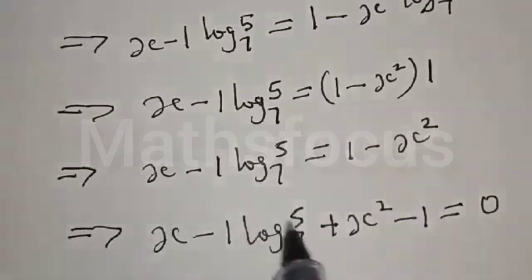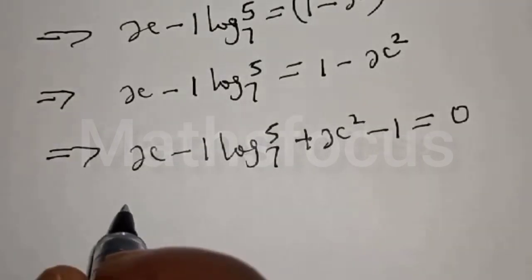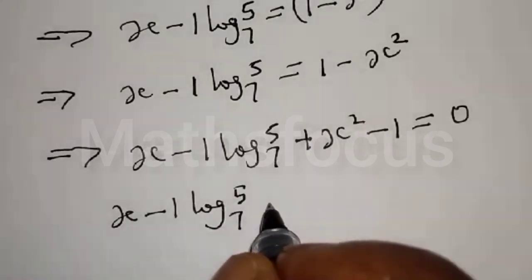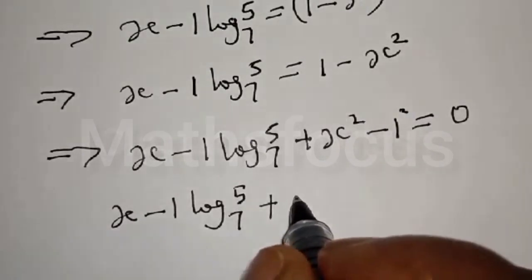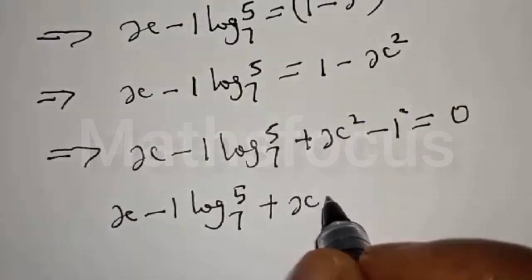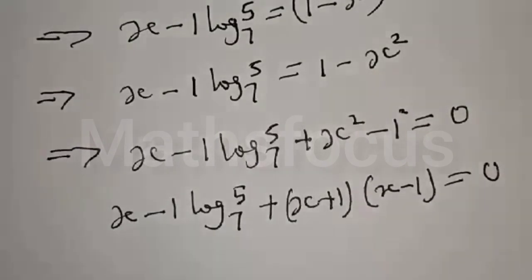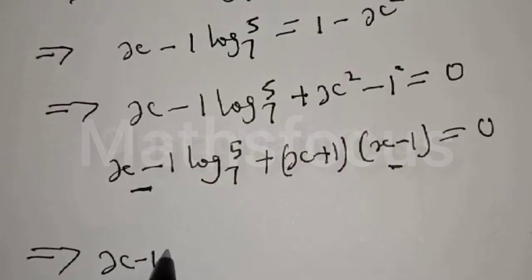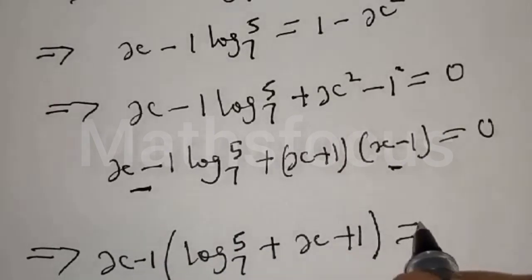If minus x squared comes to the other side it becomes plus 1, and this plus 1 becomes minus 1, equal to 0. We have x minus 1 times log base 7 of 5 plus x squared minus 1. The difference of two squares x squared minus 1 can be written as x plus 1 times x minus 1, equal to 0. So we have x minus 1 times log base 7 of 5 plus x plus 1 equal to 0.